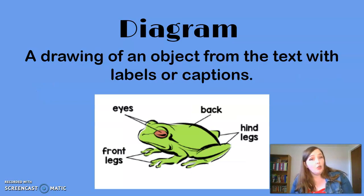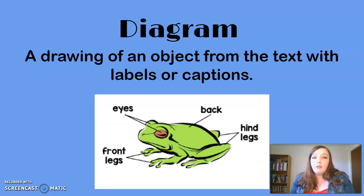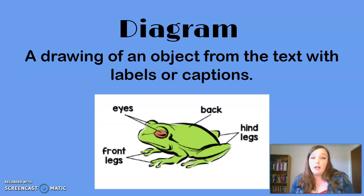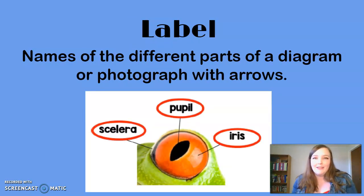Another nonfiction text feature you might find is a diagram. A diagram is usually a drawing of an object from the text with labels or captions. Looking here at a drawing of a frog, there are labels all around it — this is a diagram. It labels the parts so you know exactly what they are. In this case, it's labeling all the parts of a frog's body.